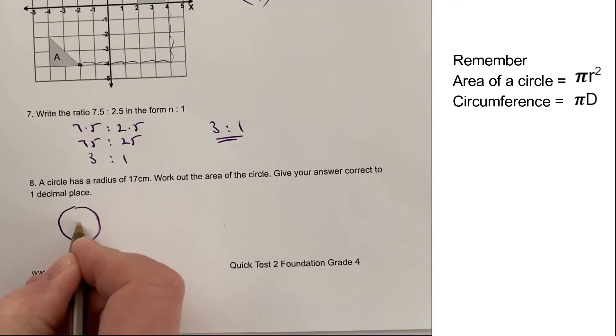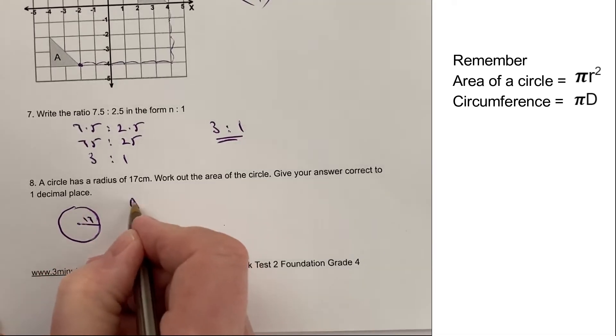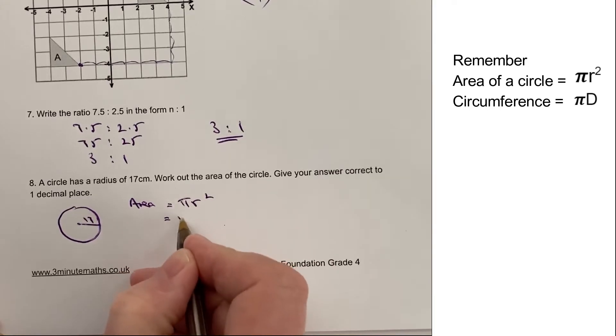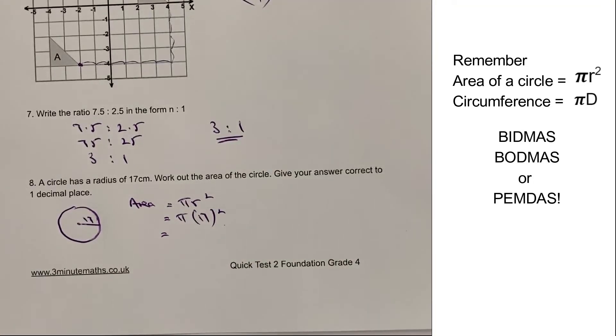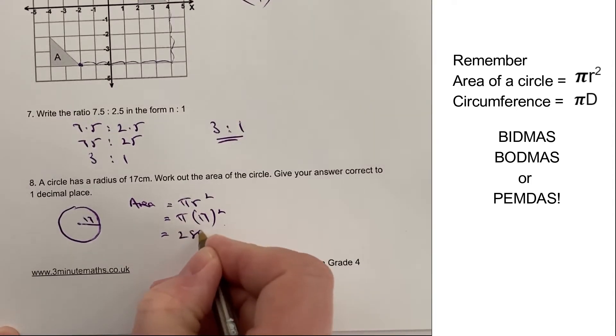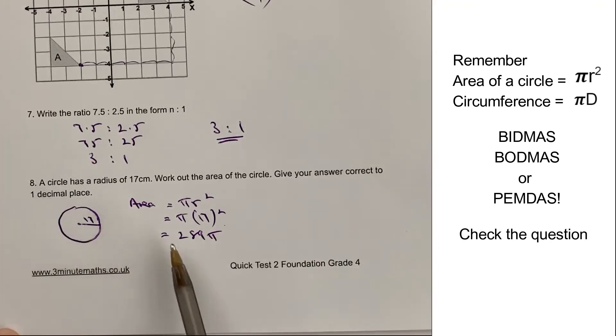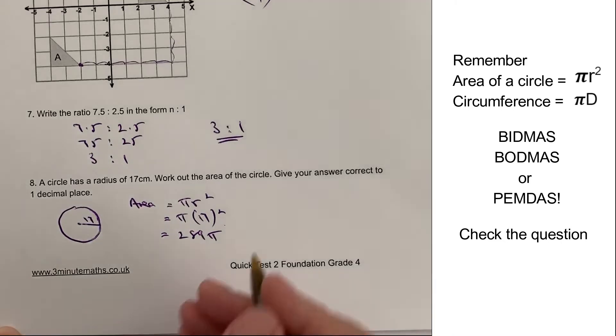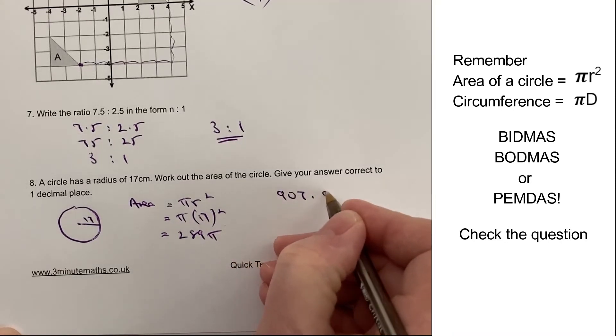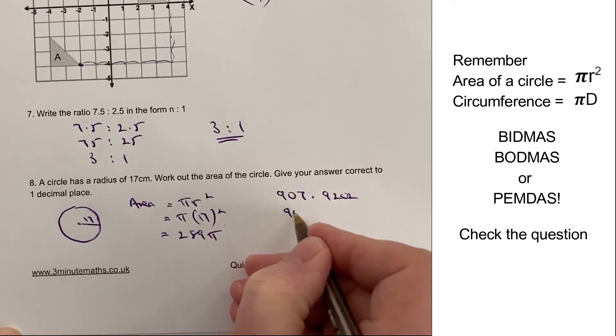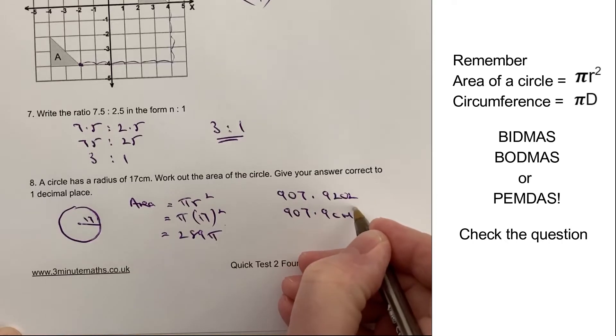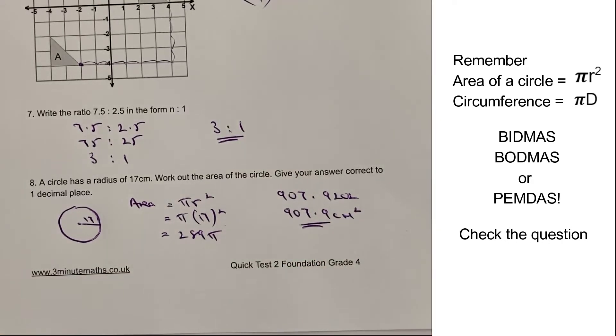On to question number eight. Circle has a radius of 17. Work out the area. Well, this is one of those things. I always do a little sketch. It's got a radius of 17. The area of a circle equals pi r squared. Well, that's going to be pi. And the radius is 17. Now, remember from BIDMAS, you need to do the 17 squared first. So you multiply 17 by 17, either using a calculator or just using a normal multiplication. And that's going to give you 289 pi.